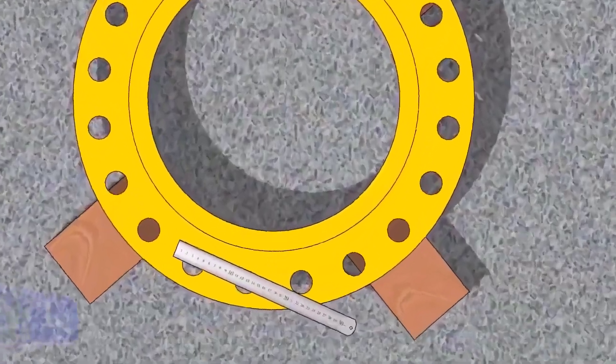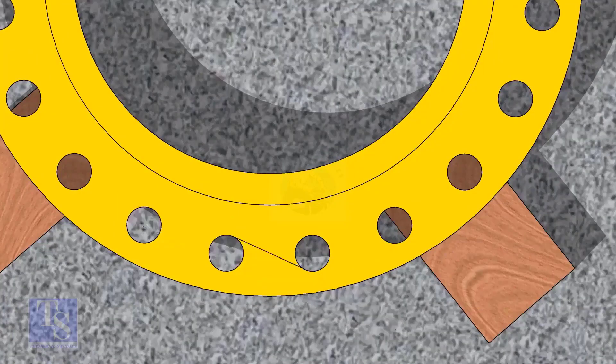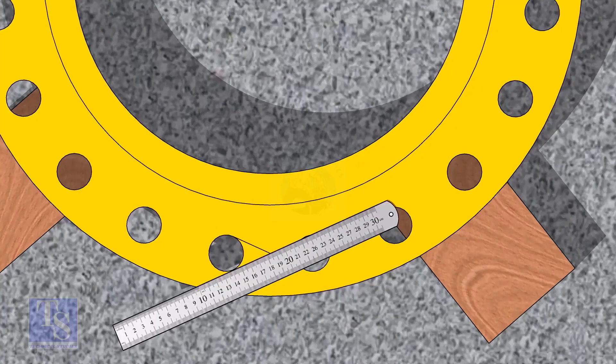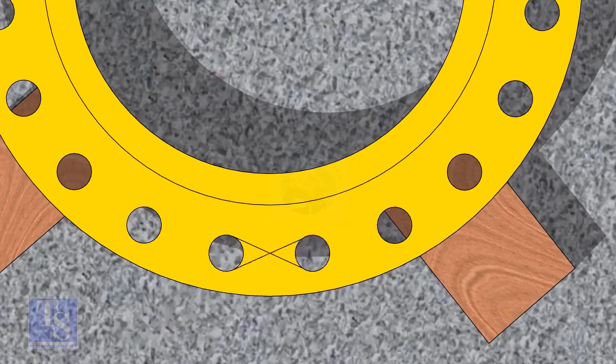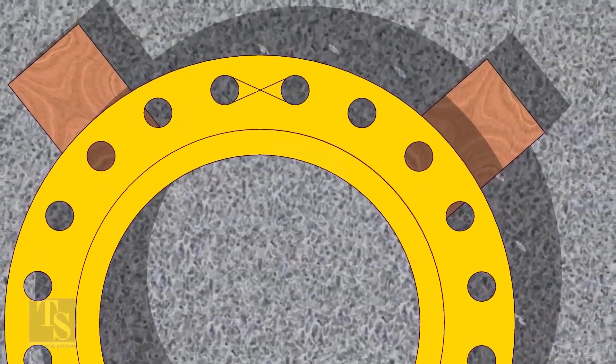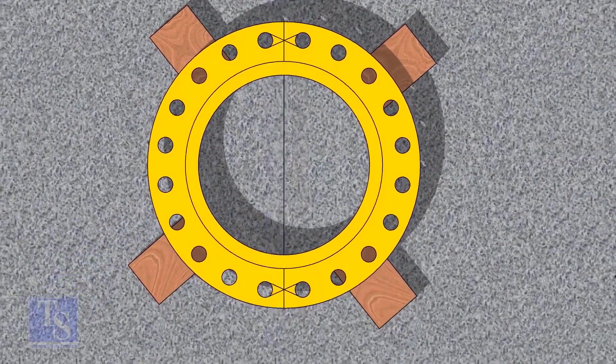Let us mark the center line of the flange. Draw tangential lines of two adjacent holes. The intersection of the lines is the center of these holes. Draw the center of the two holes on the opposite side. Draw the center line of the flange as shown.